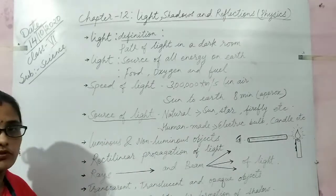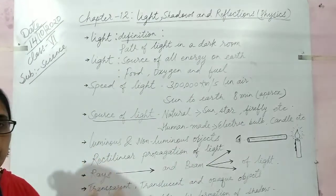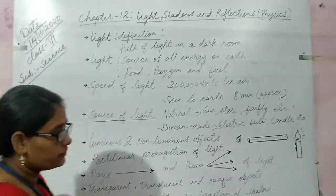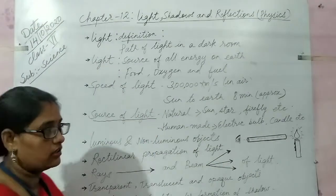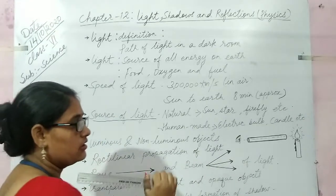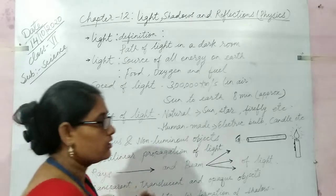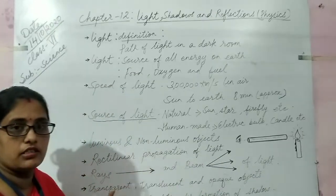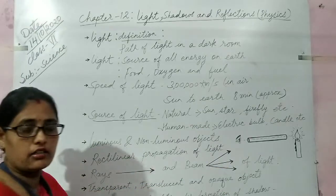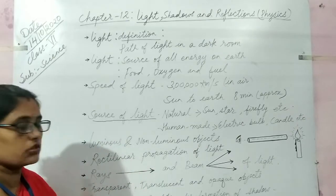Rectilinear propagation of light — light always travels in a straight path. You might have studied in your previous class that light always goes in a straight line. For example, if you light a candle and look through a hollow pipe or rubber tube, when the pipe is straight the flame can be easily seen, but when you bend the pipe the candle flame cannot be seen. This means light travels in a straight line.